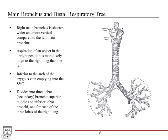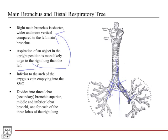The right main bronchus is shorter and wider, with a larger diameter, and it's at a more vertical angle compared to the left. Because it's wider, more vertical, and shorter, if you aspirate something — meaning it goes down the wrong pipe into the trachea rather than the esophagus — and you're in the upright position, it's more likely to go into the right lung than the left, due to these features of the right versus left main bronchus.